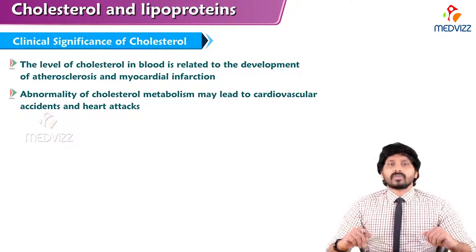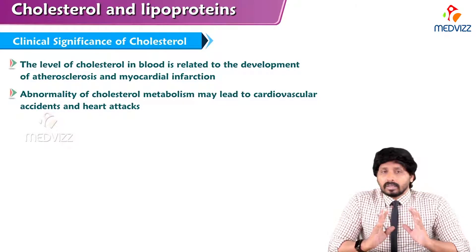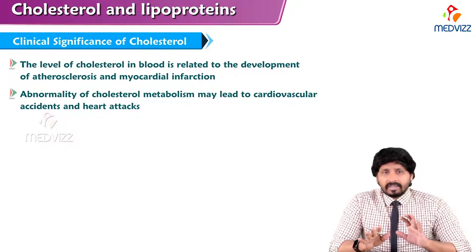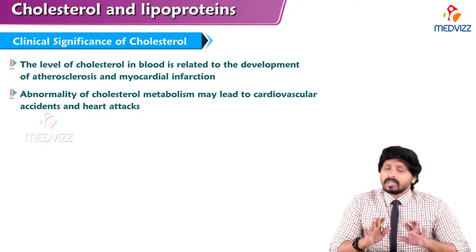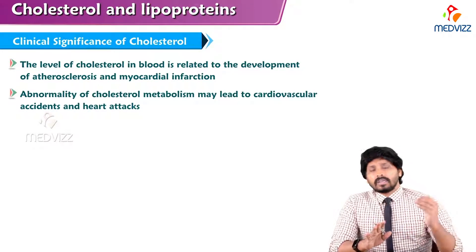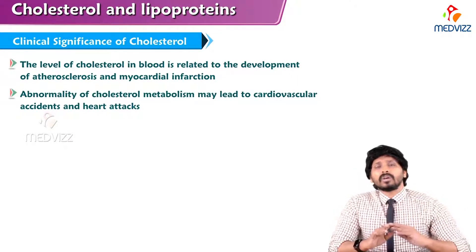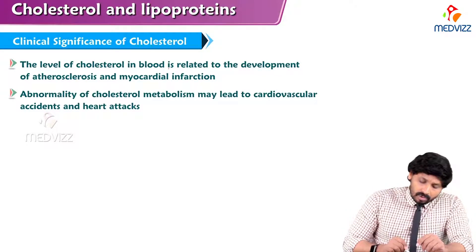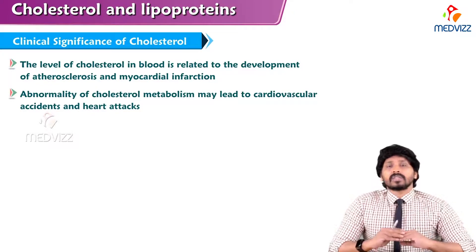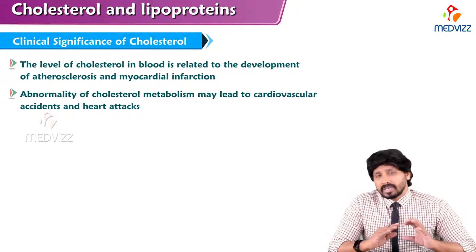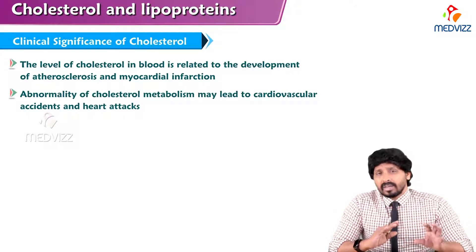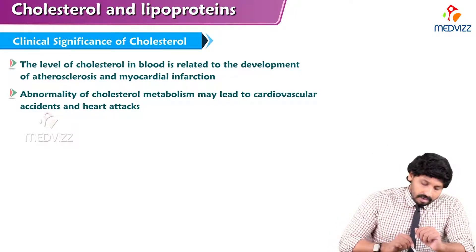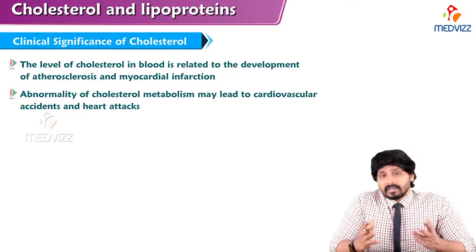What is the clinical significance of cholesterol? The influx and efflux of cholesterol have to be tightly regulated. If there is an imbalance, cholesterol will start accumulating in the endothelial lining of the blood vessels, which is a life-threatening condition. The level of cholesterol in the blood is related to the development of atherosclerosis and myocardial infarctions, especially when it accumulates in the endothelial lining of cardiac arteries. Abnormality in cholesterol metabolism may lead to cardiovascular diseases and heart attacks.